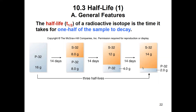Add another 14 days, and half of the 4 grams have decayed, so we have now 2 grams of phosphorus-32 left, and 2 grams plus the 12 — that's 14 grams of sulfur-32 now. So over the course of three half-lives, we can see how phosphorus-32 has decayed from 16 grams to 2 grams.